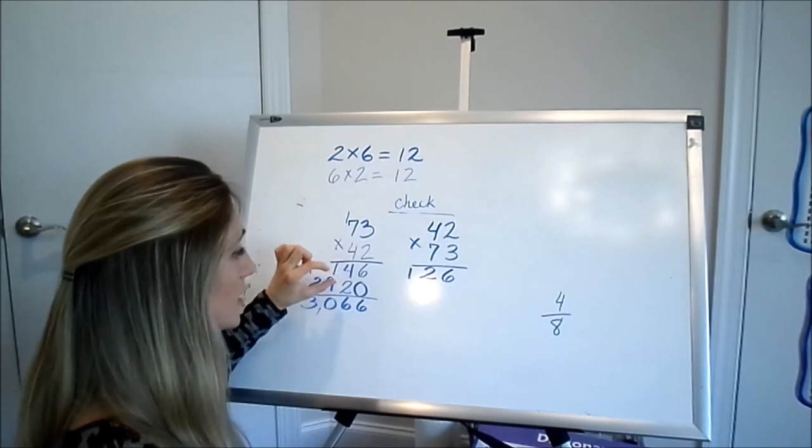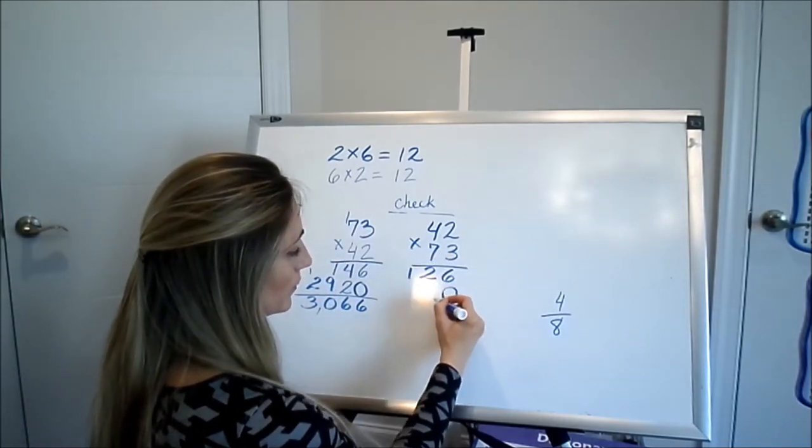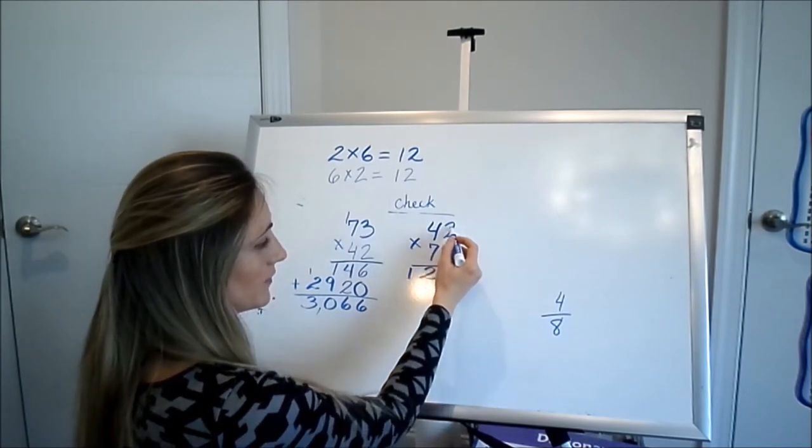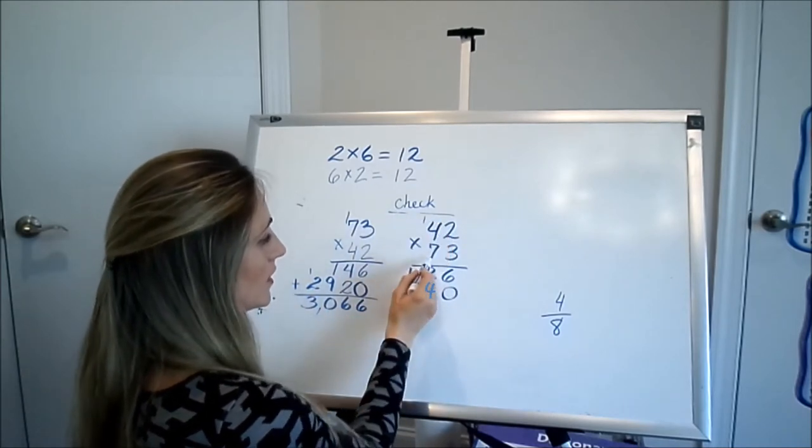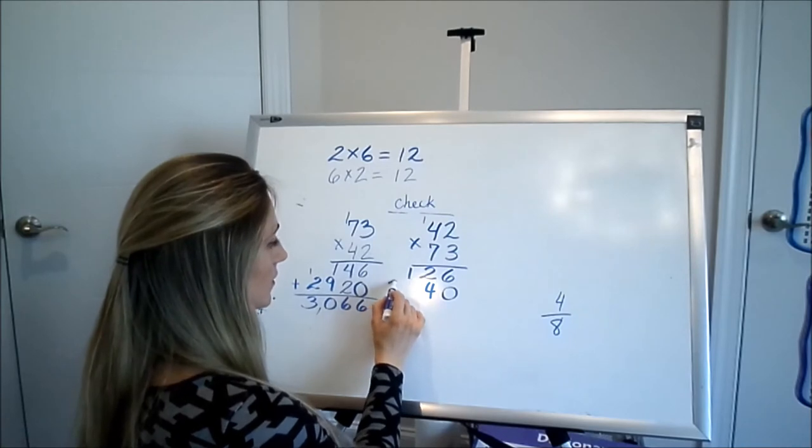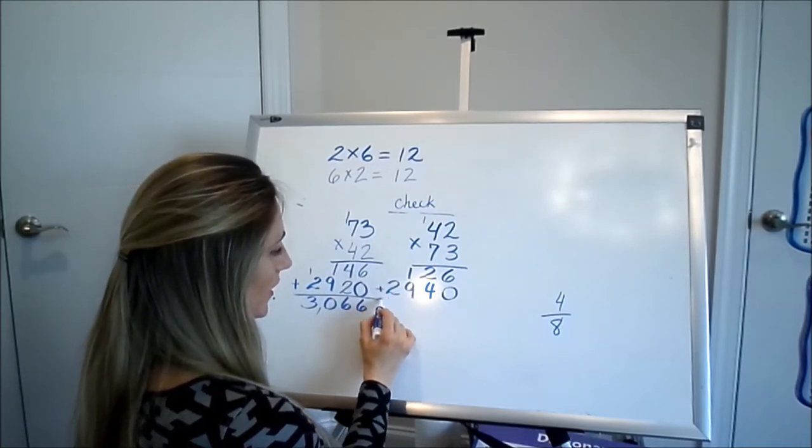The partial products are going to be different. So we're going to keep the 0 in the ones place and we're going to multiply 7 times 2. There's your 14, carry the 100. 7 times 4 is your 28, and your 9. 29.